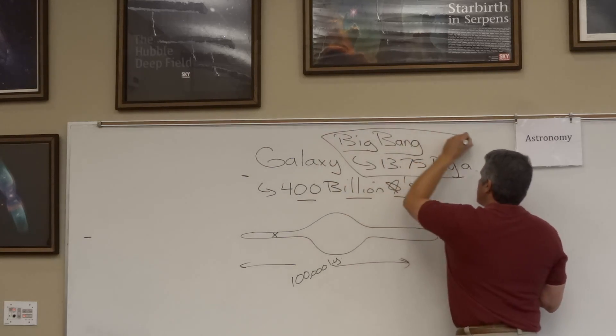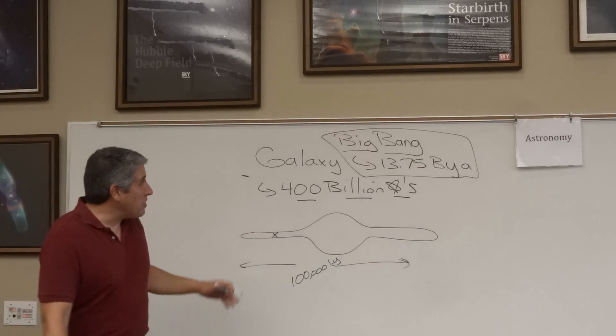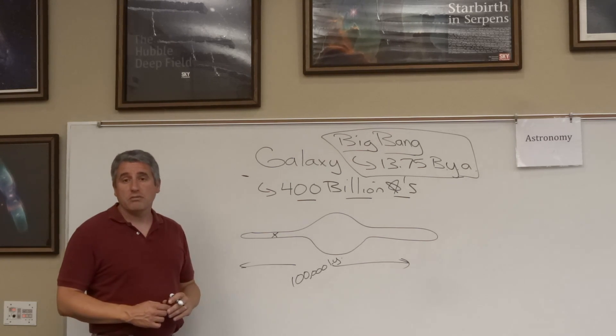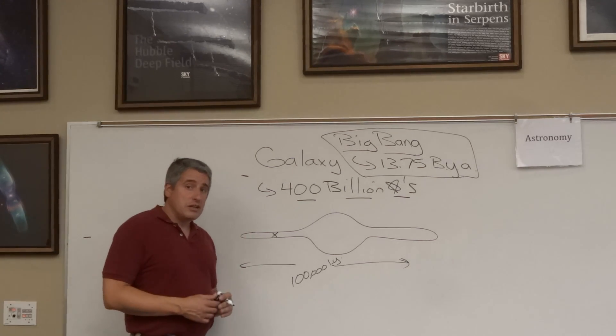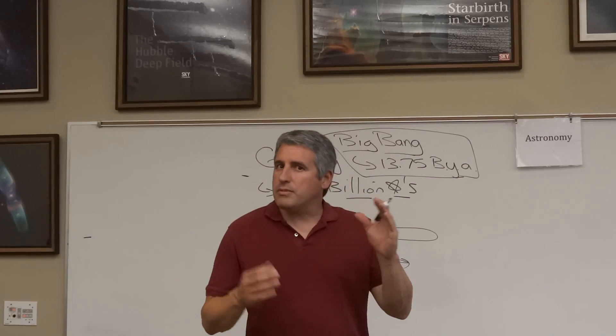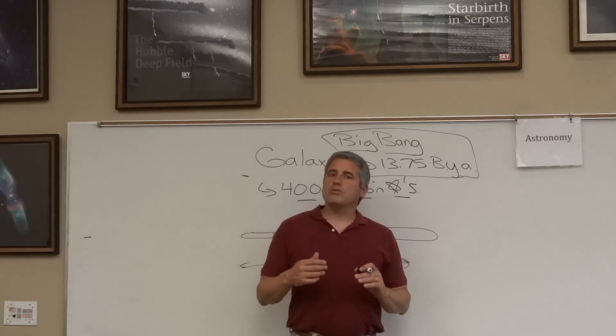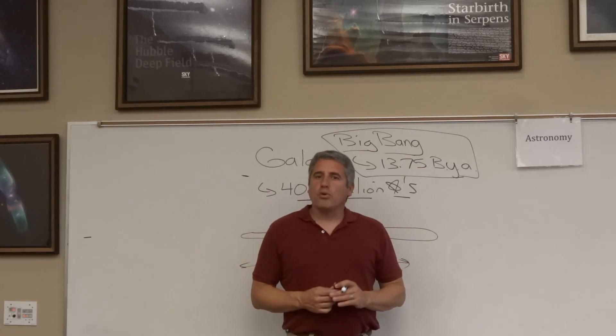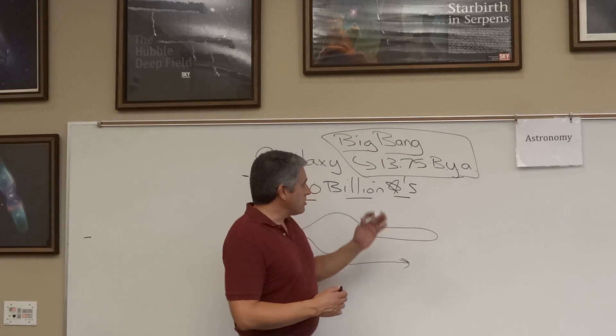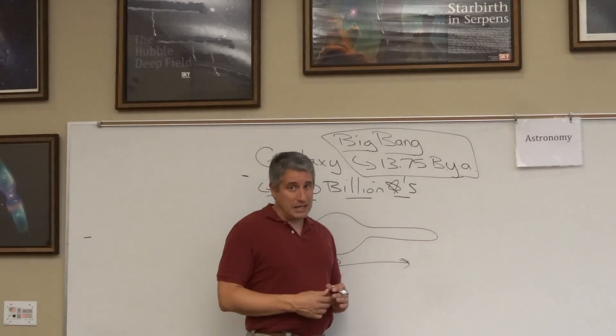The universe is believed to have begun 13.75 billion years ago. That even dwarfs the age of our solar system. Our solar system is just one star among many in our galaxy, and not all stars were born at the same time. Our solar system is believed to be about 4.6 billion years old. We're a little late to the game. Our solar system formed a good 9 billion years into the age of the universe.